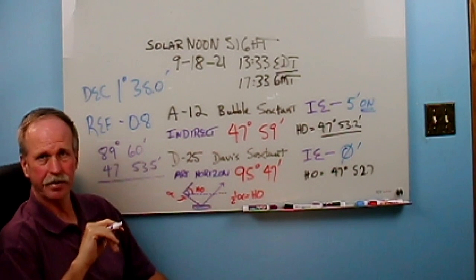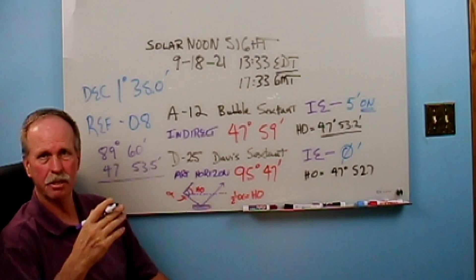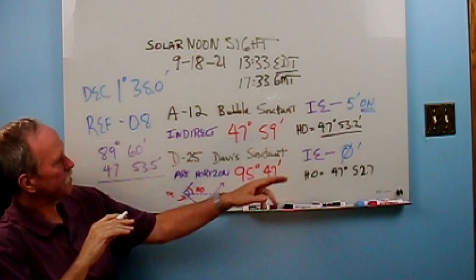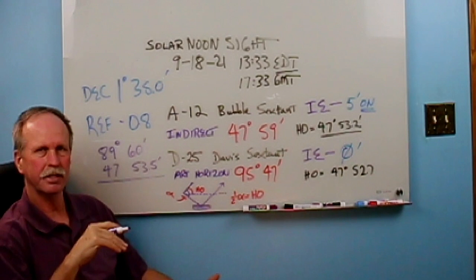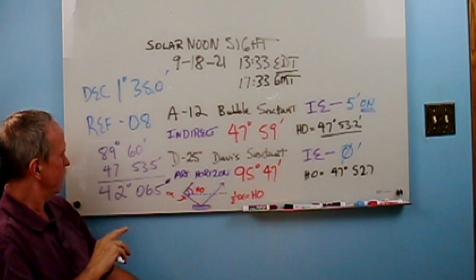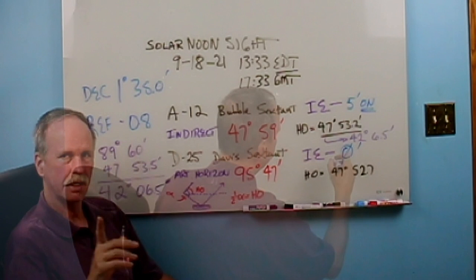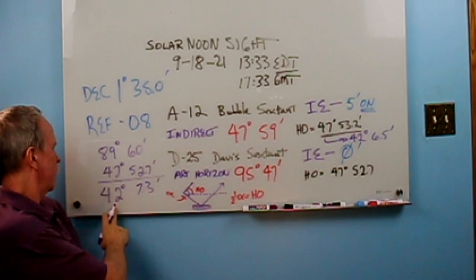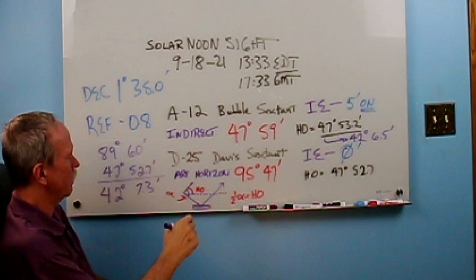Now let me show you a little trick to make your life as a navigator a little easier. We're used to dealing with decimal systems. Here in the United States, our money is in a decimal system. We're used to just dealing with that. So if we want to subtract our measured angle from 90 degrees, it's kind of difficult to do that from 90 degrees. It's a little easier if we convert it to 89 degrees and 60 minutes. And there's our answer. So we got 42 degrees, 6.5 minutes. So we'll write that over here. Let's do the same thing for our reading from the Davis.